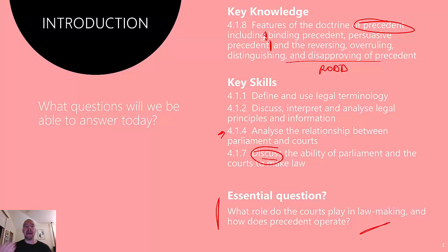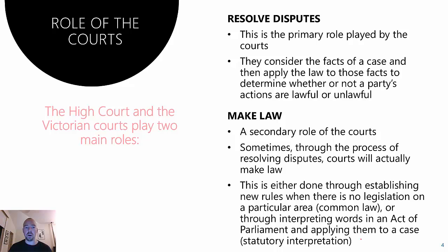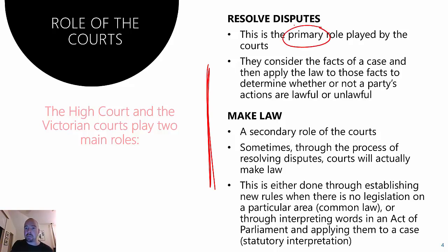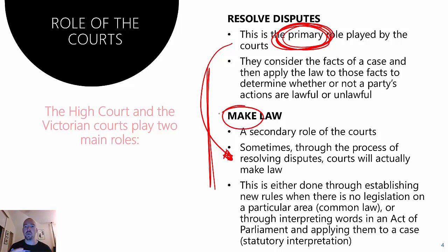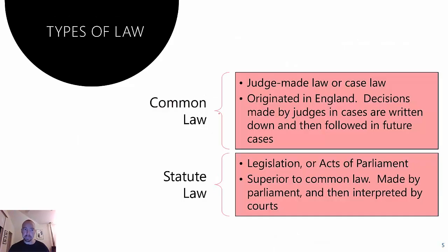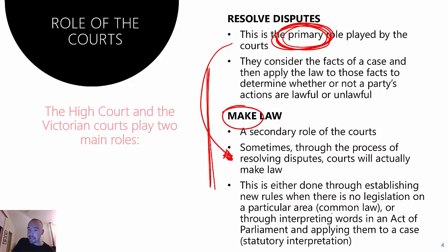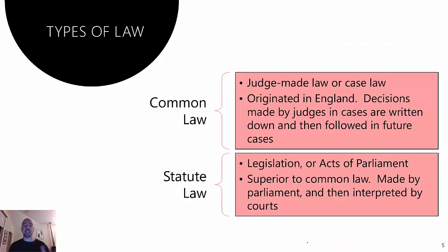What role do courts play in lawmaking, and how does precedent operate? If you want a full unpacking of this slide, I'd recommend jumping back to the 4.1.7 video. But just reiterating that the primary role of courts is to resolve disputes, and as part of that, the secondary role they can perform is to make law. Courts exist first and foremost to resolve disputes, and sometimes as a small subsection of that, they will make law as part of that process.